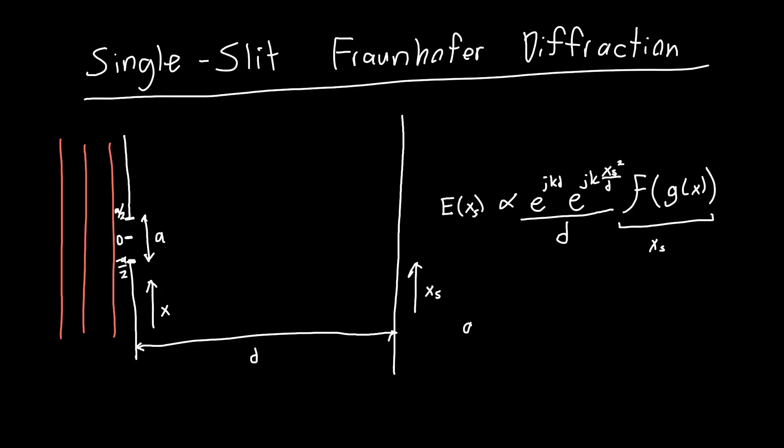So the most important thing is defining our aperture function g of x. In this case we can draw it out graphically. This is x equals 0, this is a over 2, and this is minus a over 2. Our aperture isn't attenuating the light, so it's got a height of 1, and it's got a height of 0 everywhere outside the slit. So all we need to do is take the Fourier transform of this function.